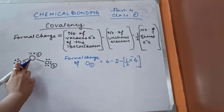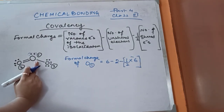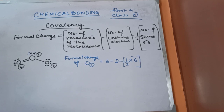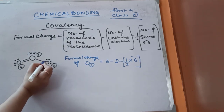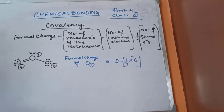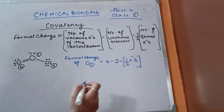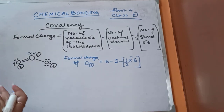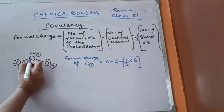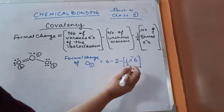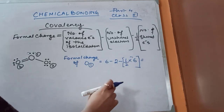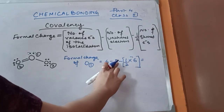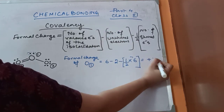You might ask why we count the electron shared by the other oxygen atom too — that's exactly why the formula includes the factor of half: it accounts for that, making calculation easier. We count all shared electrons in the bonds and then take half. So: 6 minus 2 minus 3 = +1. The formal charge of O1 is +1.